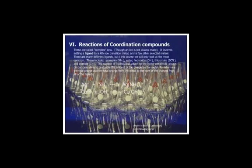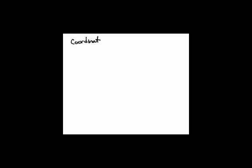Now we need to talk about Roman numeral six, which is something new with a lot of content. We have something called a coordination compound, sometimes called complex ions. People think complex ions are complex — they are not. A coordination compound has two parts.